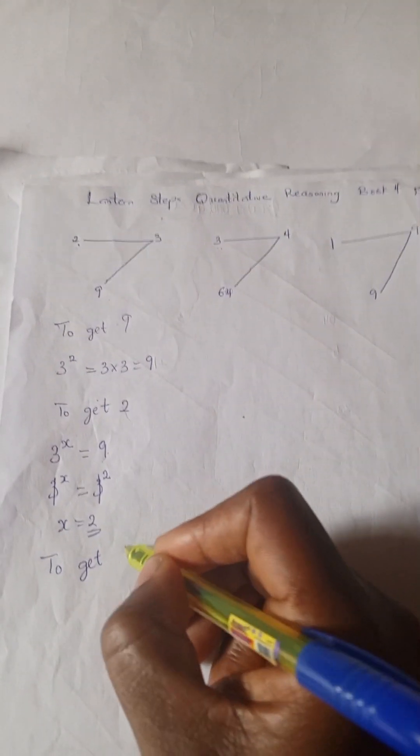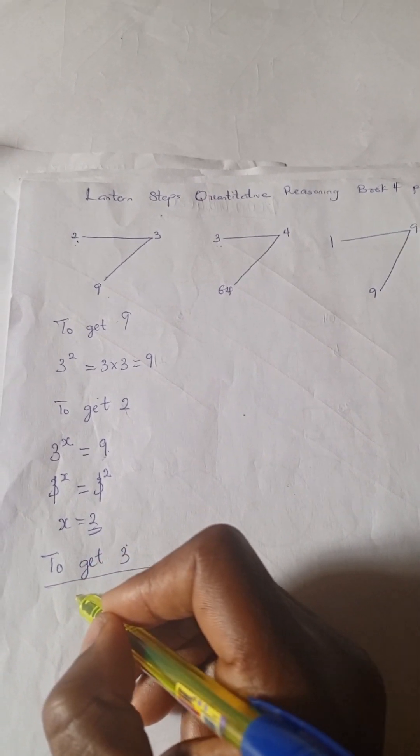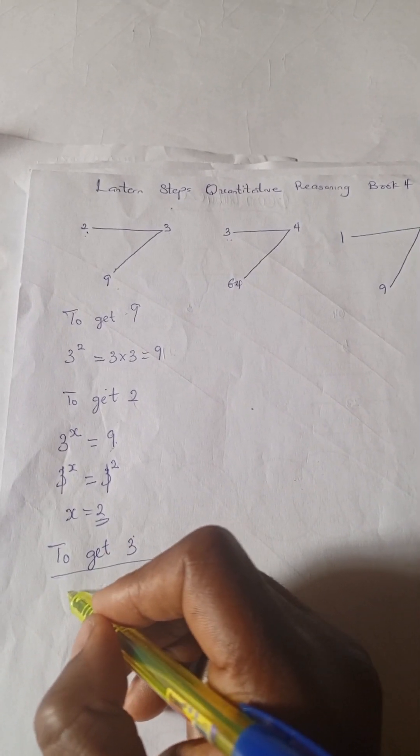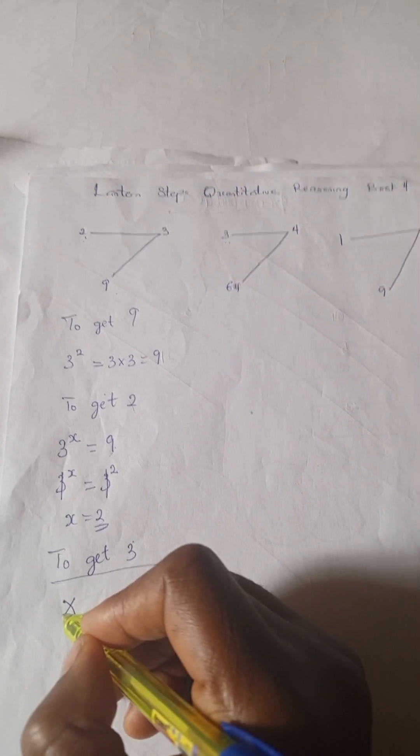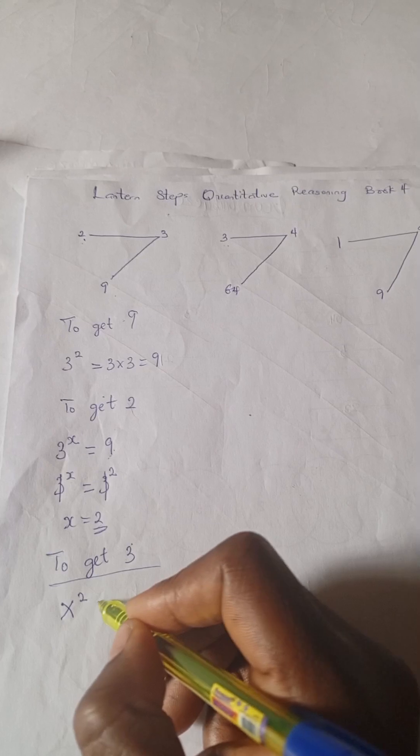So to get our 3 we're going to have, let's assume that we do not know what that is.